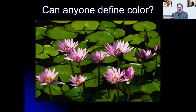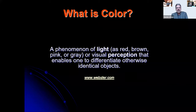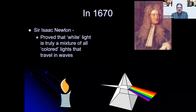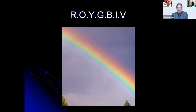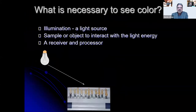What is color? Light is a phenomenon of visual perception that enables one to differentiate otherwise identical objects. In 1670, Sir Isaac Newton proved that white light is truly a mixture of all colored lights that travel in waves — the familiar Roy G. Biv rainbow. Light is color, but what is necessary to see color? We need illumination, a sample or object to interact with the light energy, and a receiver or processor.